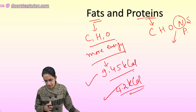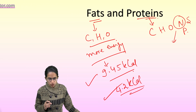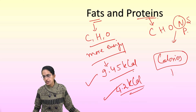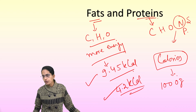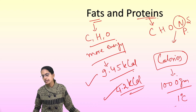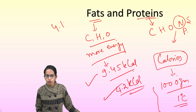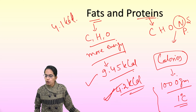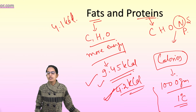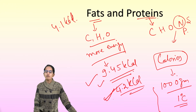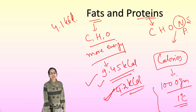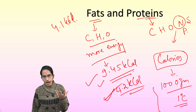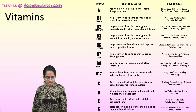From carbohydrates, fats, and proteins, we get calories. A calorie is the amount of energy required to raise the temperature of 1000 grams of water by 1 degree Celsius. Protein gives 4.1 kilocalories, carbohydrates 4.2 kilocalories, and fats 9.45 kilocalories. These values are important for objective-type questions.